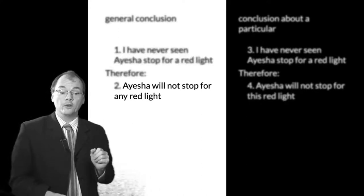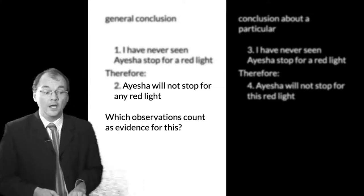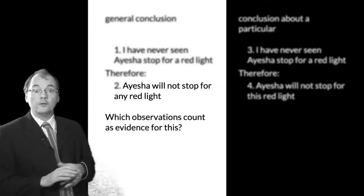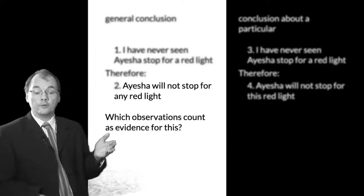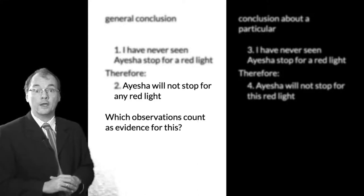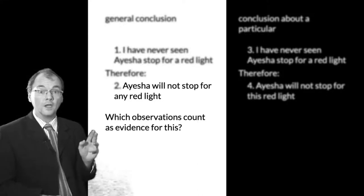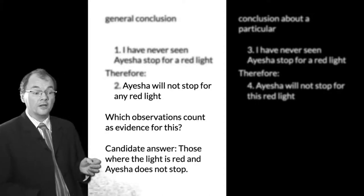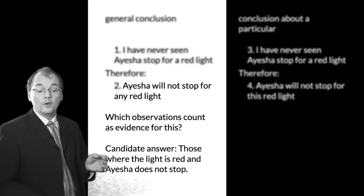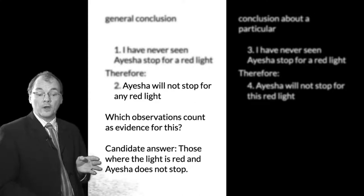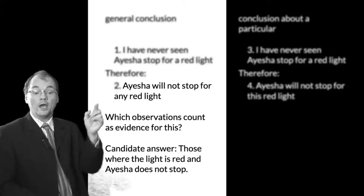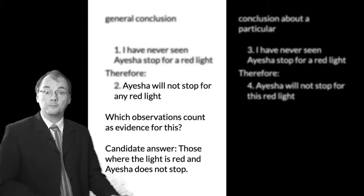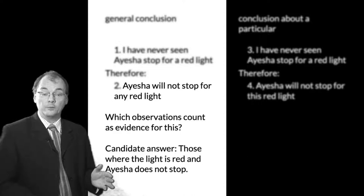So what we need to do is to focus on inductive arguments with general conclusions. And in fact, I'm just going to focus on the conclusion: Aisha will not stop for any red light. I'm going to ask you, which observations count as evidence for this conclusion? What could you observe that would count as evidence that Aisha will not stop for any red light? Here's a candidate answer: those observations where the light is red and Aisha does not stop are the observations which count as evidence for that conclusion. Nice idea, very simple.